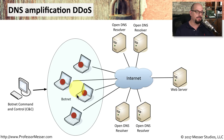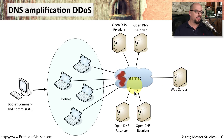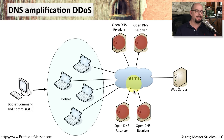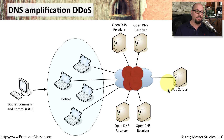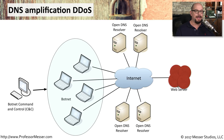In this DNS amplification denial of service, the botnets send requests to open DNS resolvers on the internet, but they spoof the source of the request — instead of coming from the botnet, they claim the request came from the target web server. Those requests go out to multiple DNS resolvers. Since we're asking for the DNS key or some other large piece of information, the small request generates a very large response. Because the source was spoofed as the web server, that large response gets sent to the web server — and with that, they're able to send a little information into DNS resolvers, get a relatively large response back, and easily bring down the web server with a distributed denial of service attack.